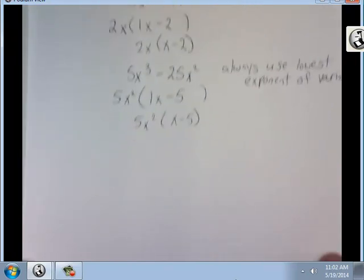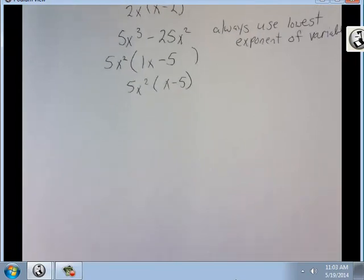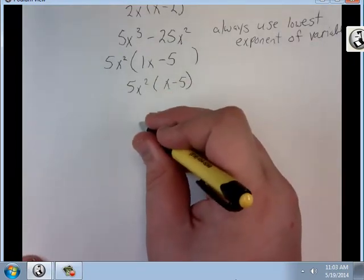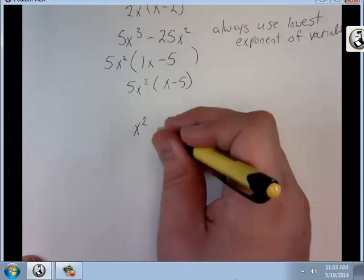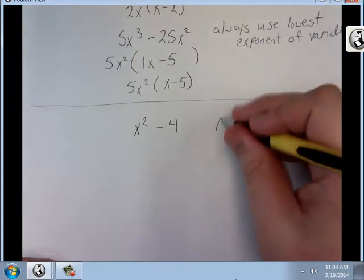All right, not an exceptionally hard one, but one that kind of gets overlooked. So now let's look at this. x squared minus 4. How about we factor this? There's no middle term.